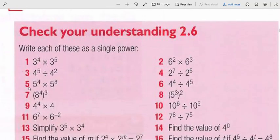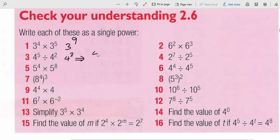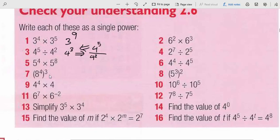Practice: 3⁴ times 3⁵ — since they have the same base, we add the powers: that gives 3⁹. 4⁵ divided by 4² — since it's division with the same base, we subtract the powers: that gives 4³. We can also rewrite this as a fraction: 4⁵ over 4², and in both cases subtracting the powers gives 4³.